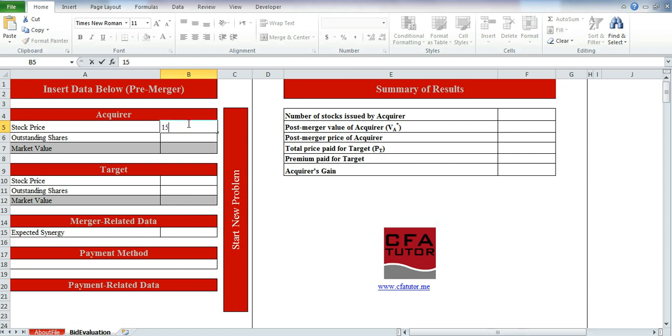And we'll just insert the information that we have over here. We have for the acquirer a pre-stock price of $15 and the shares to be $75 million, but it's going to be assumed by default. And then if we enter for the target stock price of $10 and shares of $30, which means the market value is $300 million right now.